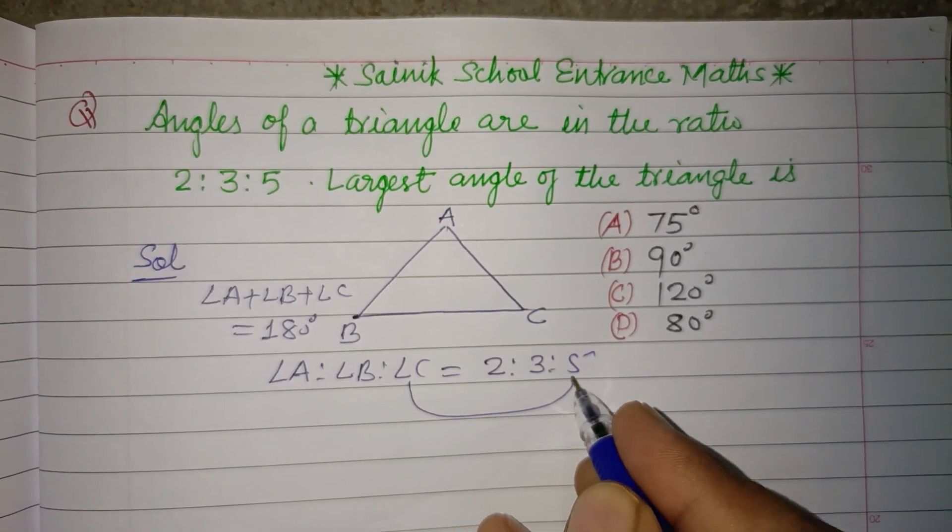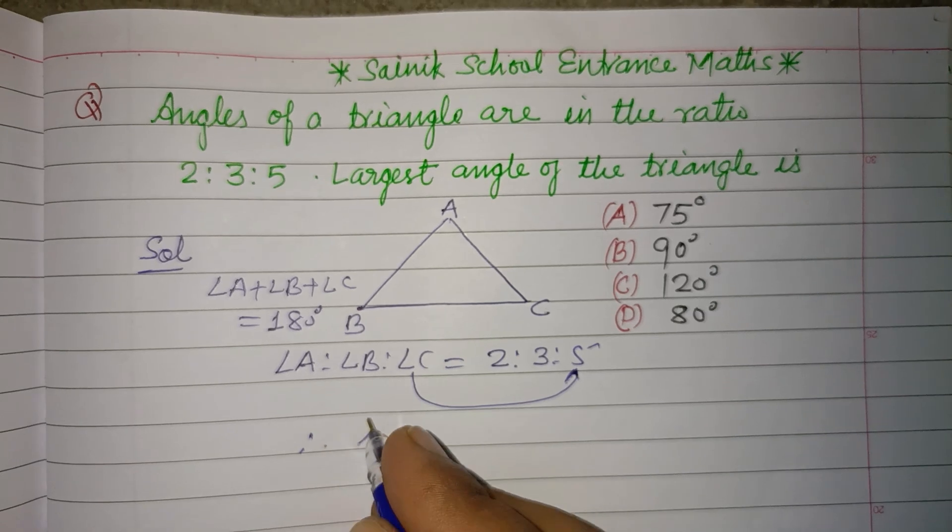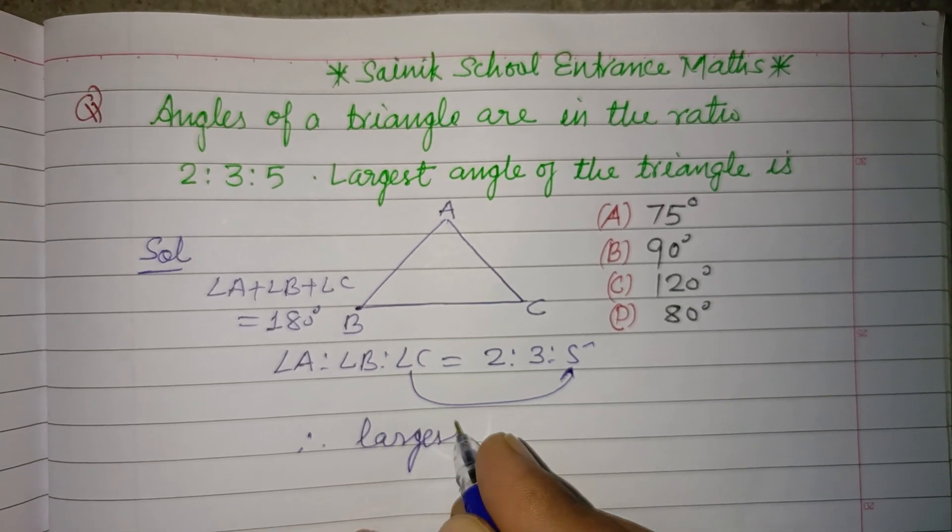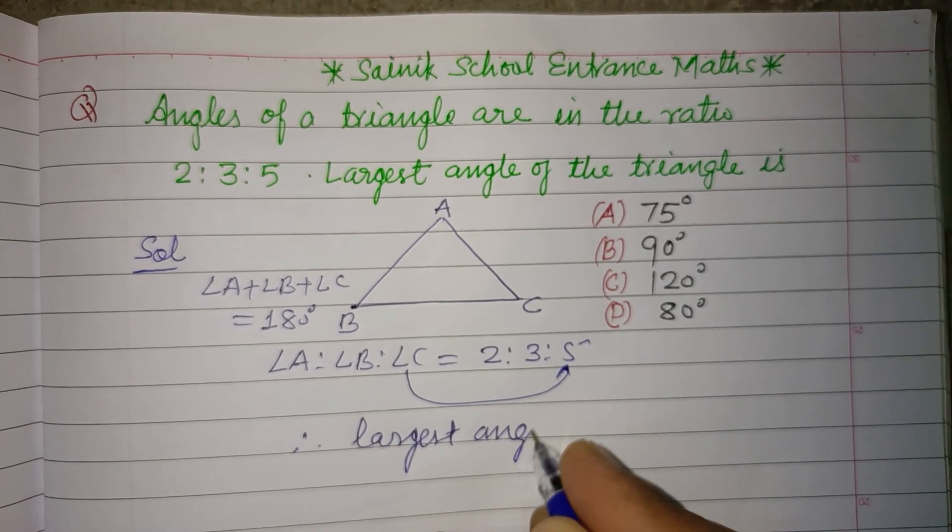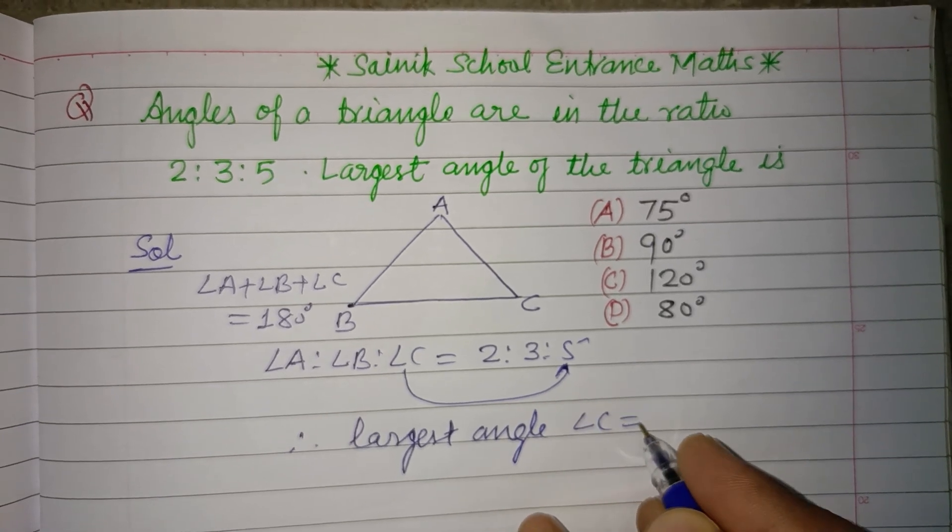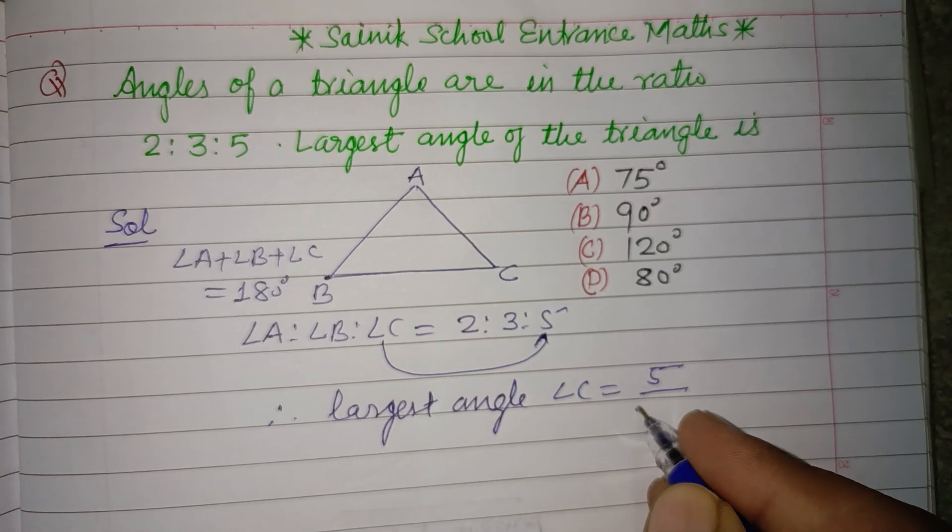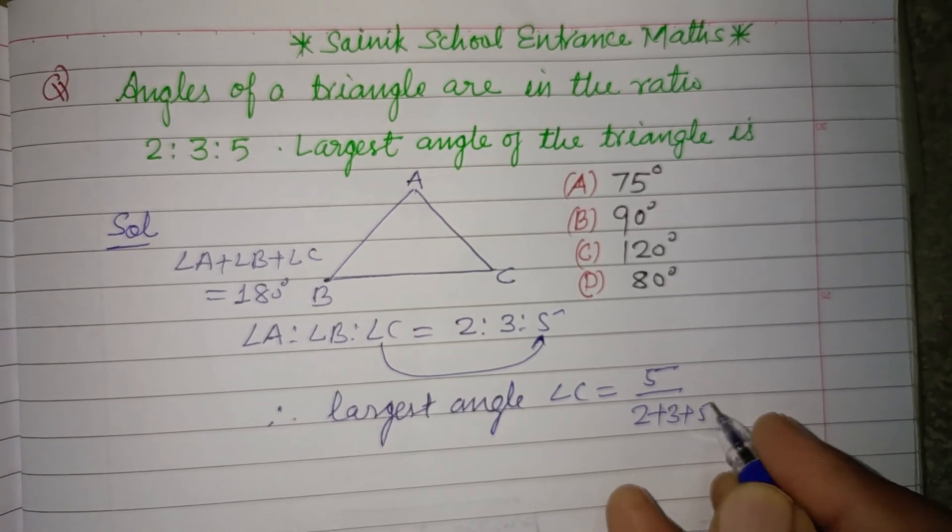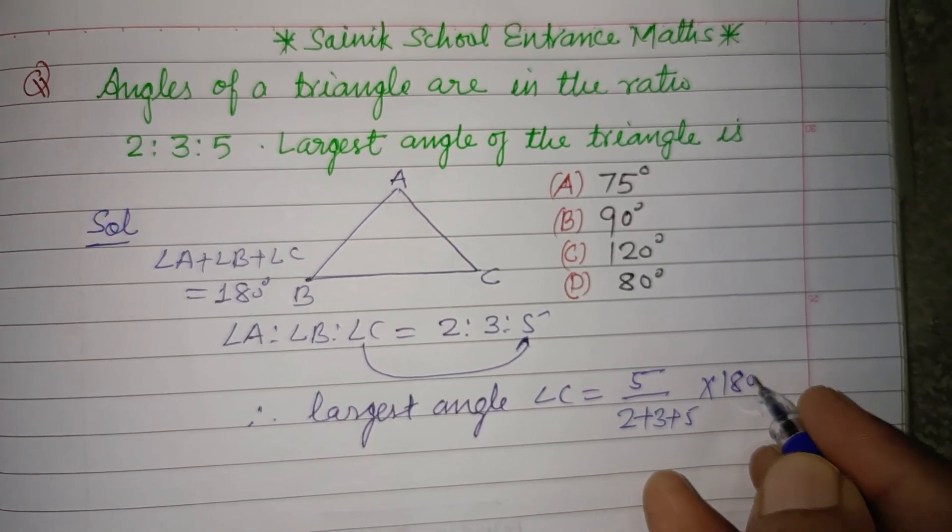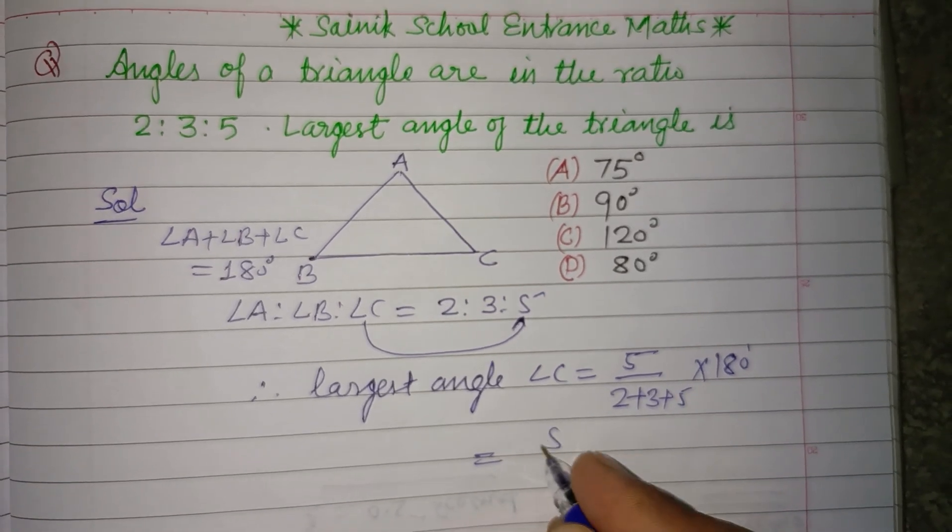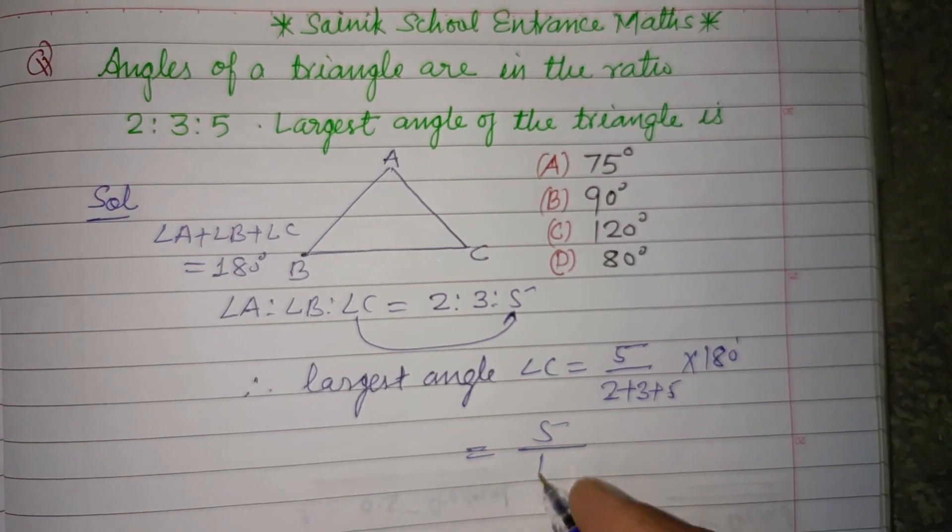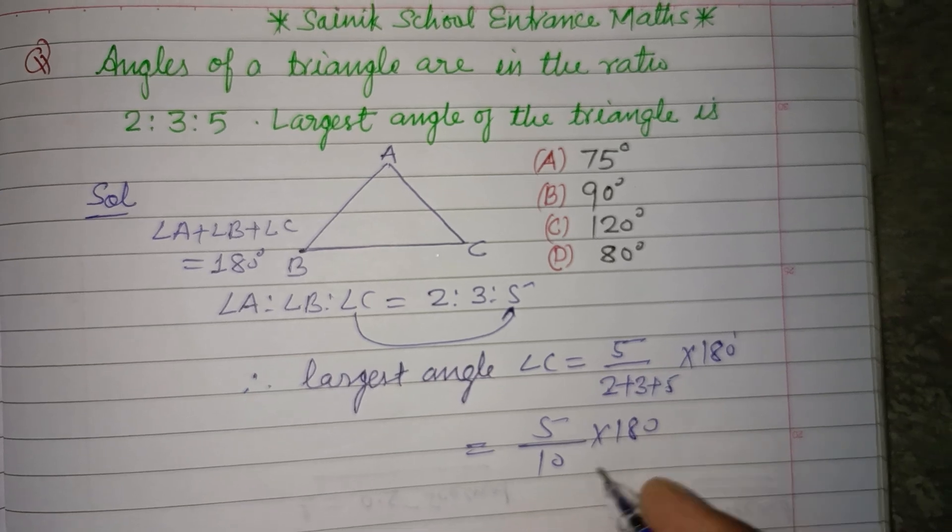So largest ratio is 5, therefore largest angle, angle C, equals ratio of largest angle upon total ratio: 5 upon (2+3+5) into sum of all three angles. So 5 upon 10 into 180.